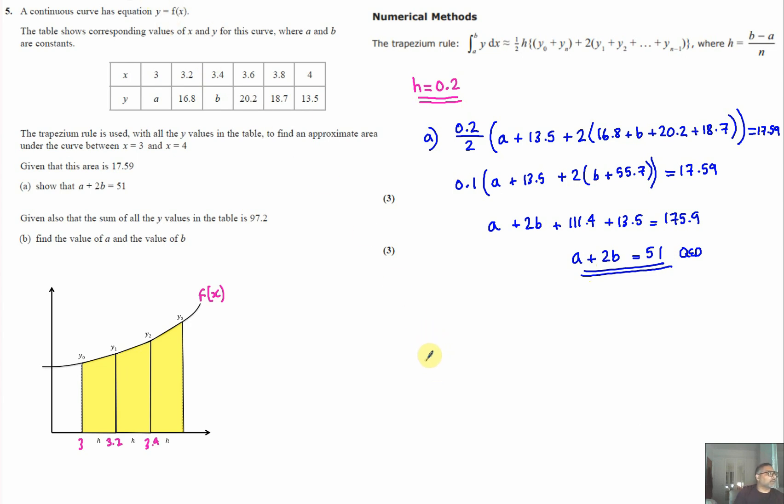For part b, given that the sum of all y values in the table is 97.2, we need to find a and b. We can write an equation: a plus 16.8 plus b plus 20.2 plus 18.7 plus 13.5 equals 97.2.